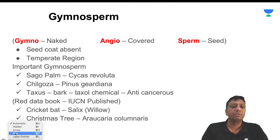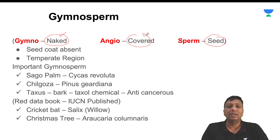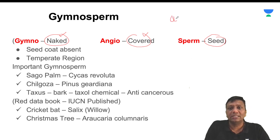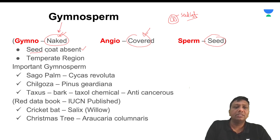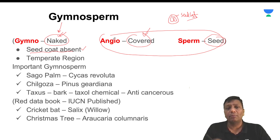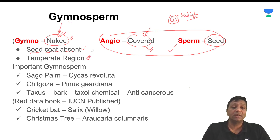Now we go into gymnosperms. Gymnosperms and angiosperms have distinct features. 'Gymno' means naked and 'angio' means covered, while 'sperm' represents seed. So gymnosperms have naked seeds — no seed coat — while angiosperms have covered seeds with a seed coat present. Gymnosperms are mostly growing in temperate and hilly areas where the temperature is somewhat cold.